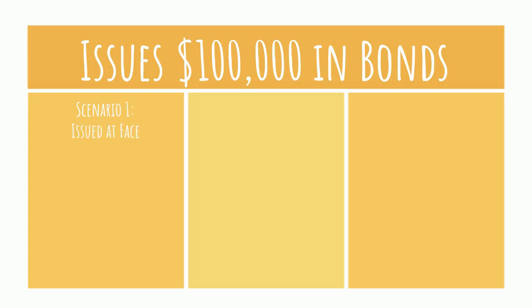This would be issuing the bonds at face. The company would debit cash for a hundred thousand dollars and credit bonds payable for a hundred thousand dollars. The second scenario: the company could get less than a hundred thousand dollars, which would be issuing the bonds at a discount.